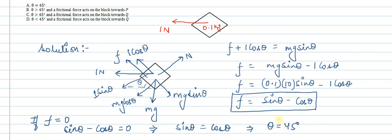So option A is confirmed. Now let's look at the other options. Option B says theta is greater than 45 degrees and frictional force acts on the block towards P. Option C says theta is greater than 45 degrees and frictional force acts towards Q. Option D says theta is less than 45 degrees and frictional force acts on the block towards Q.